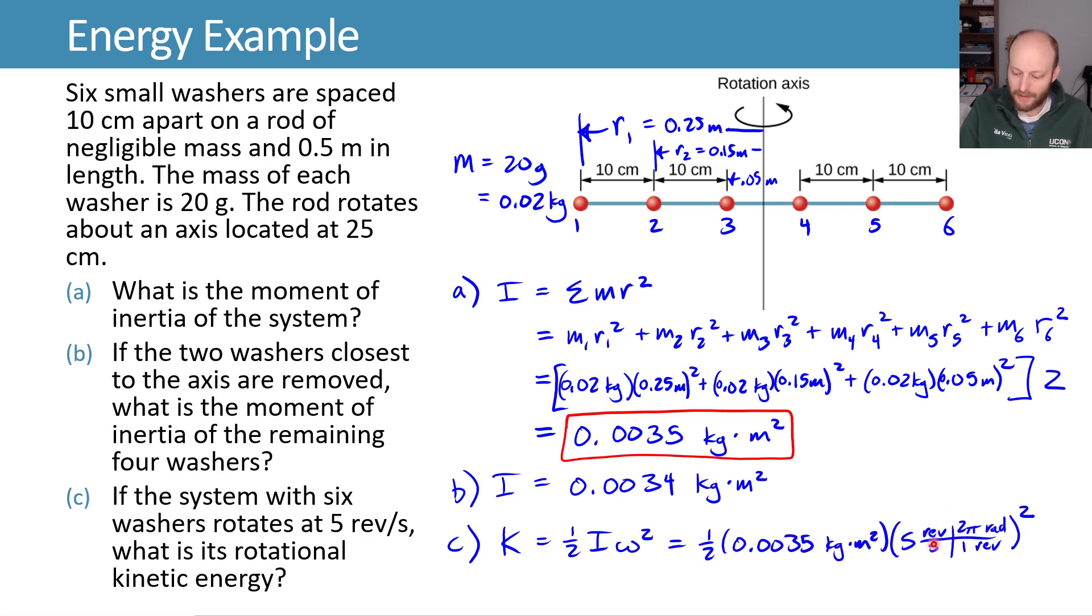And when we do our revolutions per second, we have to convert that to radians to make this work out nicely, leaving us with a final kinetic energy of 1.73 joules.